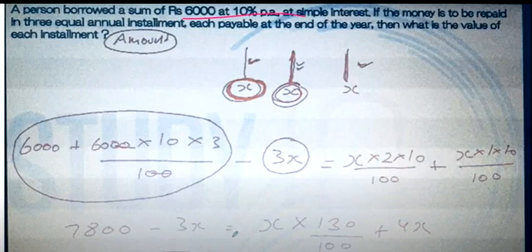If a person borrowed a sum of Rs 6000 at 10% simple interest and gives equal installments, each payable at the end of the year, then what is the value of each installment? Here, the simple interest plus principal - how much will it be?